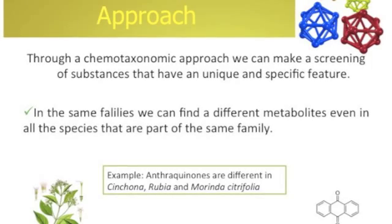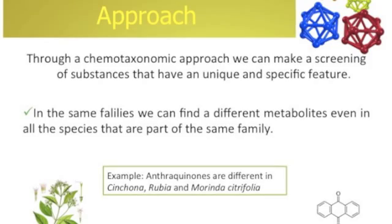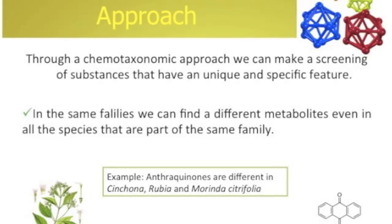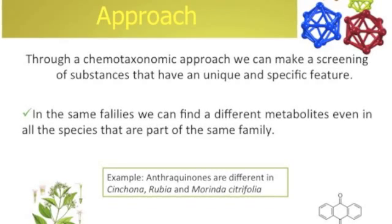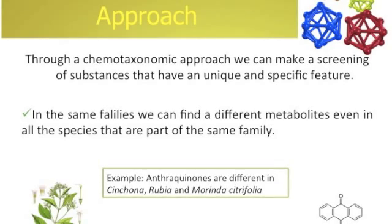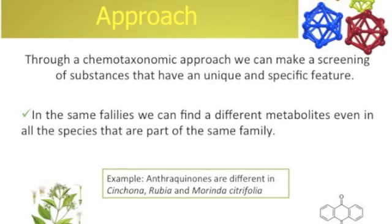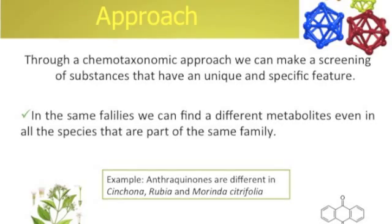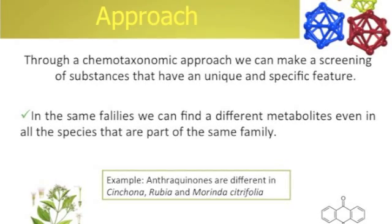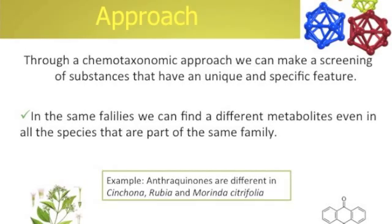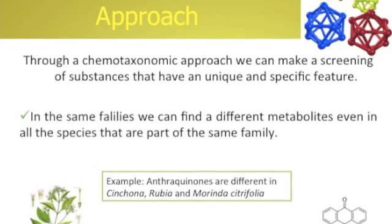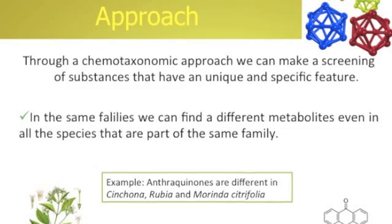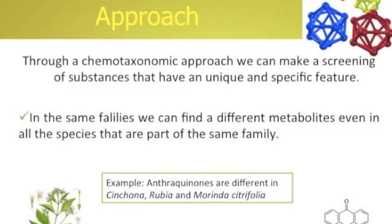Through a chemotaxonomic approach, we can make a screening of substances that have a unique and specific feature — for example, a molecule with a well-known biological activity. From this point of view, the vegetal kingdom is an inexhaustible source of secondary metabolites, because within the same families we can find different metabolites, even when all species are part of the same family.